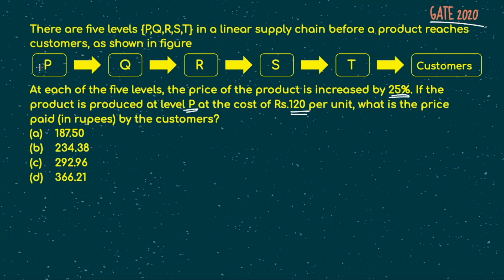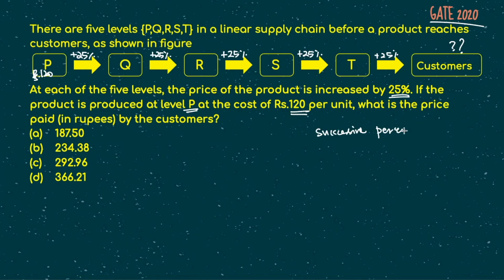So basically the item is 120 rupees at the start, and then you are increasing 25 percent on every step — 25 percent at Q, 25 percent at R, 25 percent at S, 25 percent at T, and 25 percent when it reaches the customer. So what they are asking is how much money the customer has to pay. These are called successive percentage based questions.